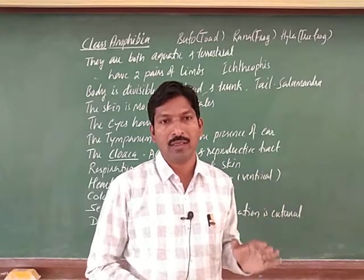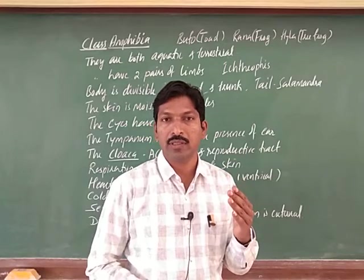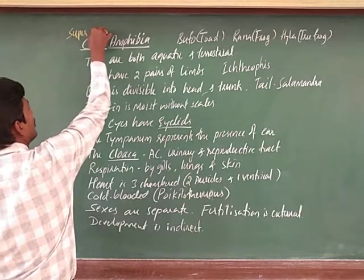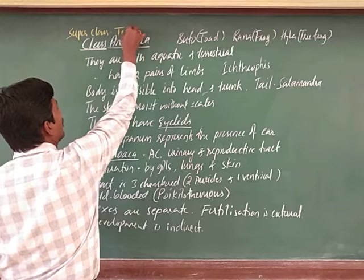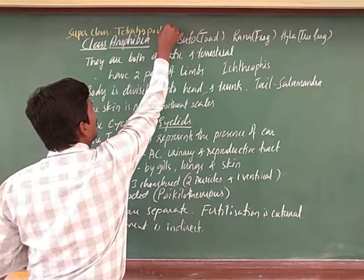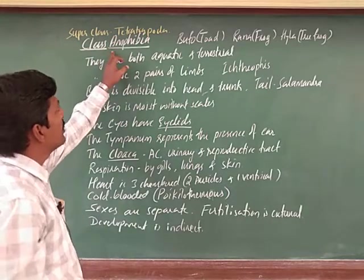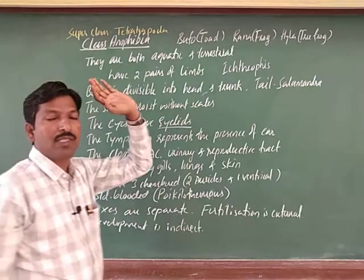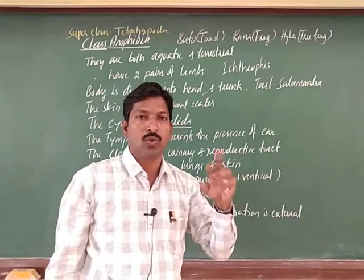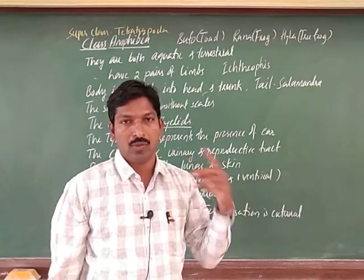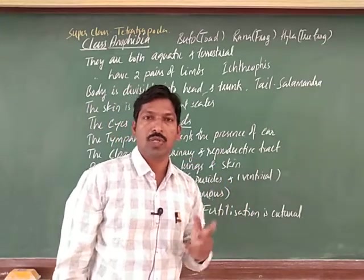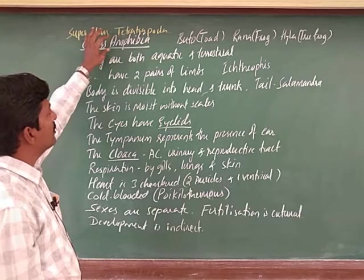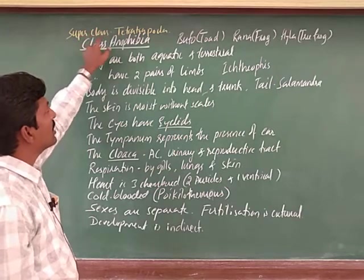These four classes together form a superclass called Tetrapoda. Below this superclass Tetrapoda, the class is Amphibia. There is also a superclass Pisces, which we have discussed into two classes: Chondrichthyes and Osteichthyes. Now the next superclass — Amphibia comes under superclass Tetrapoda.